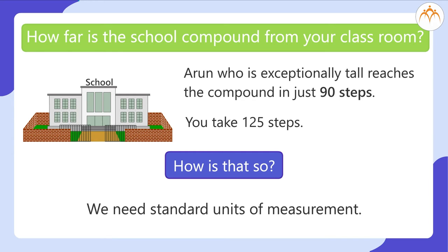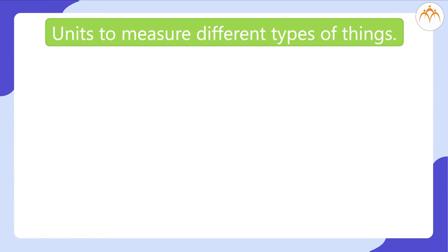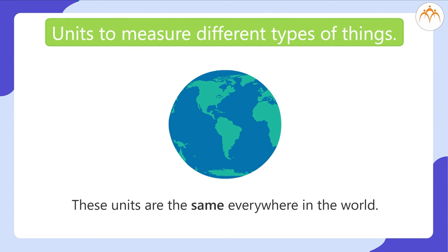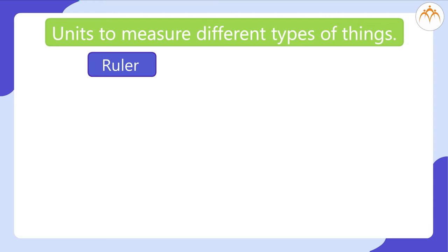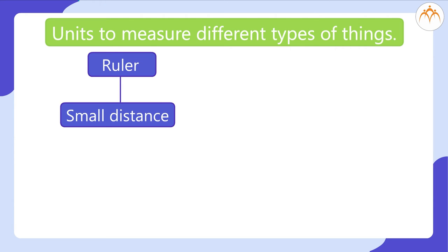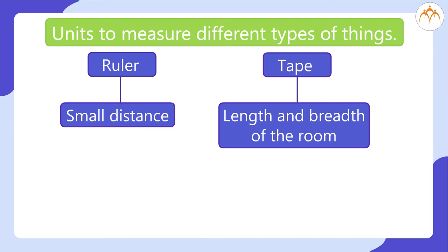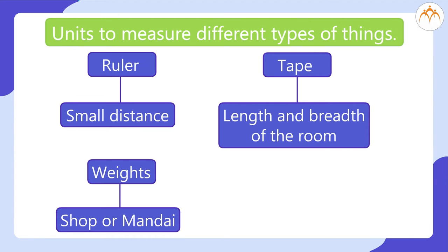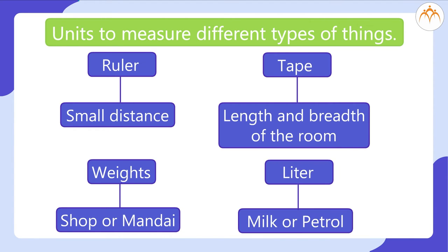We need standard units of measurement. To avoid inconsistency, there are units to measure different types of things, and these units are the same everywhere in the world. We have a ruler marked with centimeters to measure small distances. You may also have seen tape to measure the length and breadth of a room — it is a one-meter or five-meter length tape. We have also seen various weights in a shop. Milk or petrol is measured in litres. These are standard measurements.